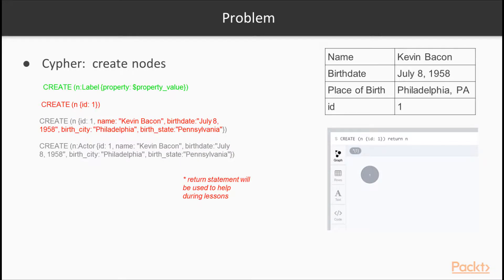Cypher allows you to create nodes with a label. In this case, we'll create a label of actor and define properties for each of our nodes. When using the CREATE statement, you can pass in a label and one or more properties. For instance, we can create an unlabeled node with an ID of 1 with the command: CREATE (n {id: 1}).